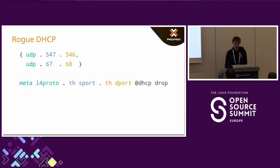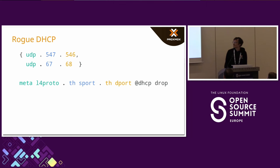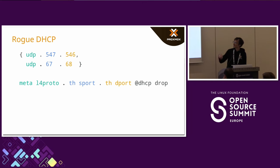You can go one step further and concatenate as many things as you like. In this case you add the protocol as well, writing rules that combine the protocol, the source port, and the destination port together in one lookup.